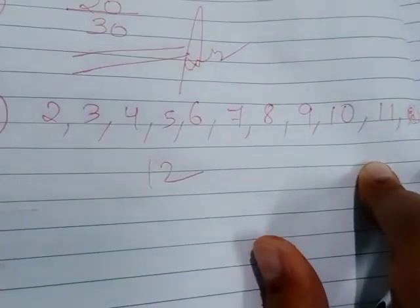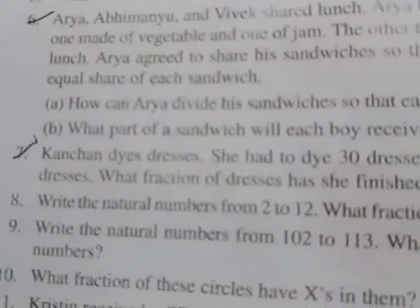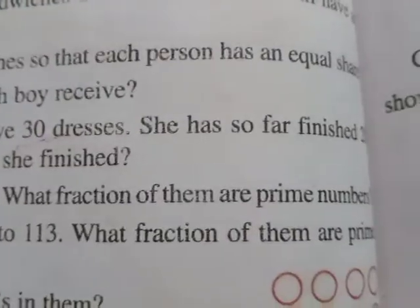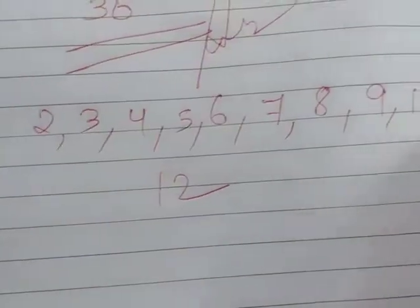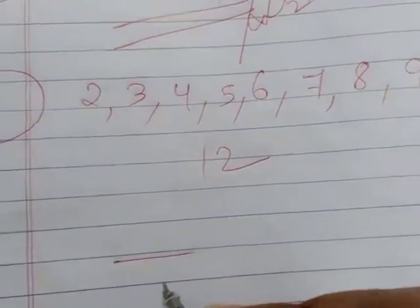All the numbers are natural numbers. So then it is written what fraction of them are prime numbers. Now these are all the numbers. So the total number first we will write down.